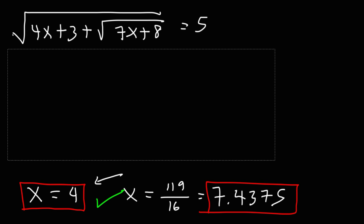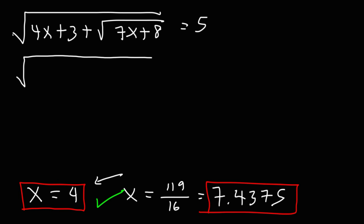Now let's check the other answer. We're going to have the square root of 4 times 119 over 16 plus 3 plus the square root of 7 times 119 over 16 plus 8. I'm definitely going to use my calculator for this one. 7 times 119 over 16 plus 8 is 60.0625. Taking the square root of that gives us 31 over 4.